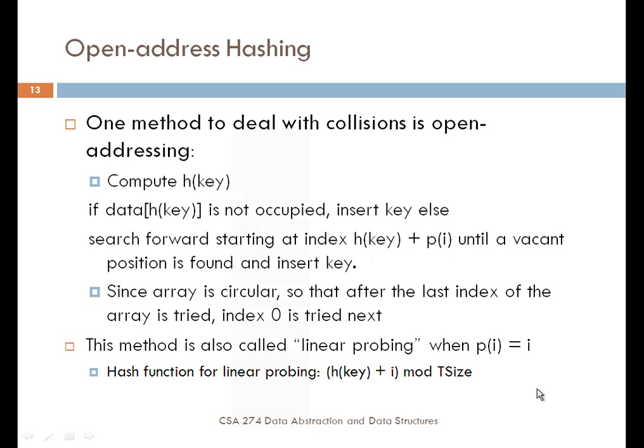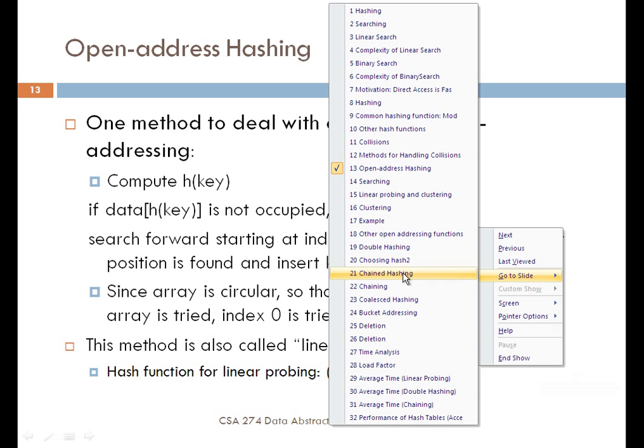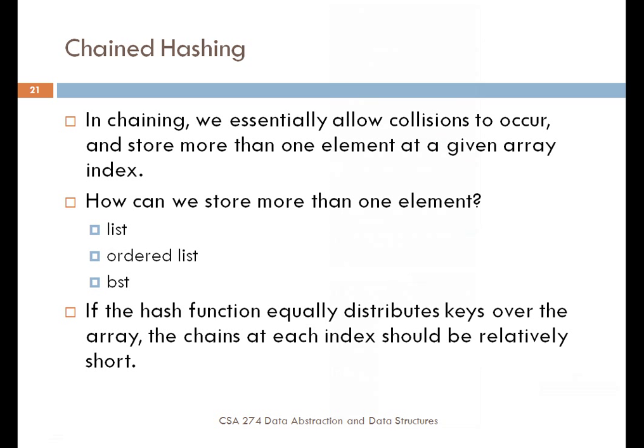Another way for dealing with collisions instead of using open address hashing is to use something called chained hashing. With chaining, what you want to be able to do is allow the collision to occur and store the element at that location regardless of whether or not it's occupied. Each location in the array isn't actually storing an element but rather storing a pointer to some other data structure — you can store a linked list, a binary search tree, or whatever you want at that location. The hash function then will map to whatever the location is, and you use this chained hashing idea to store multiple elements at that location.